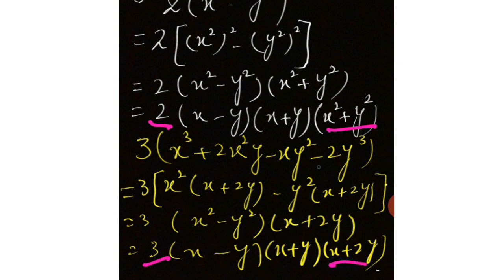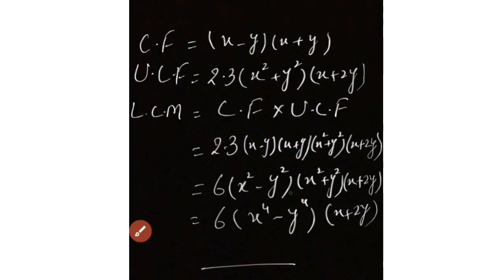Now we have 4 values: 2, 3, (x² plus y²), and (x plus 2y). If we multiply all of them then the LCM will be these values combined: 1, 2, 3, 4 multiplied together.